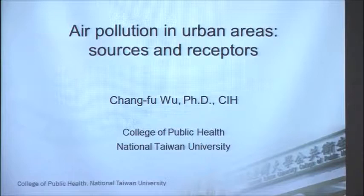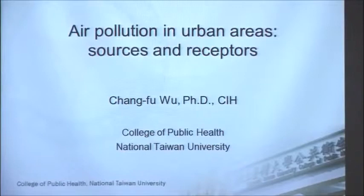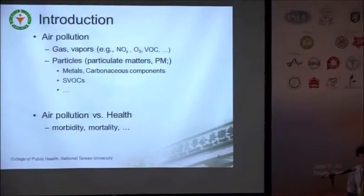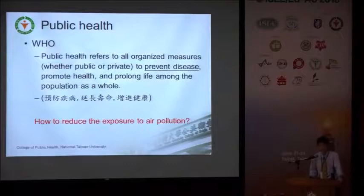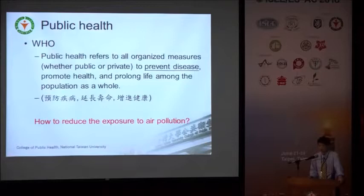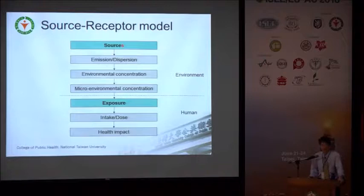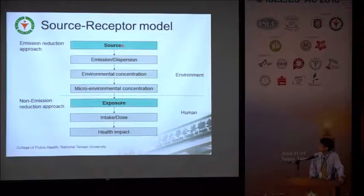I'll keep my talk as concise as possible. I believe that everyone in this room agrees that air pollution is bad for your health. So what should we do next? For people in the field of public health, we want to prevent disease. In order to prevent disease, we need to reduce exposures. And how do we reduce exposures? Based on the concept of source receptor models, there are several approaches. We can have an emission-based reduction approach — we can use engineering controls to control the sources.